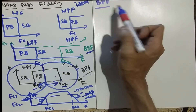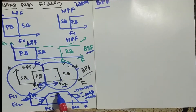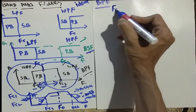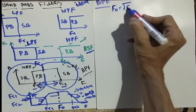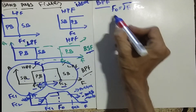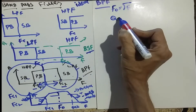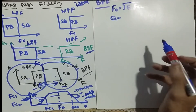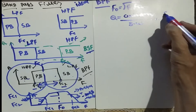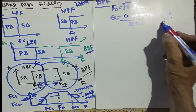In a band-pass filter, we have two new terms. The first is the middle frequency, called f0, which is the center frequency. We calculate it using fc1 and fc2: f0 is equal to the square root of fc1 times fc2. The second term is the quality factor, which is the ratio of center frequency to bandwidth, where bandwidth is fc2 minus fc1.